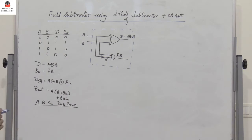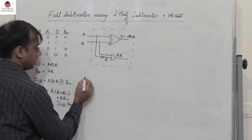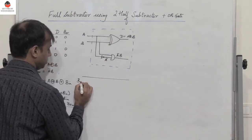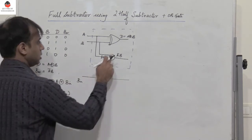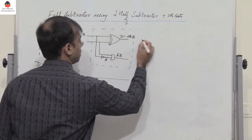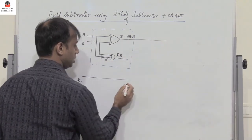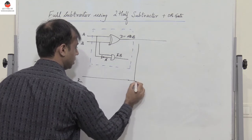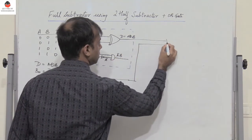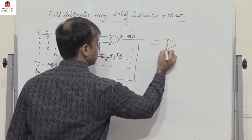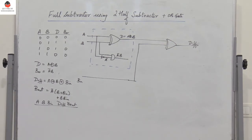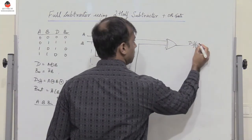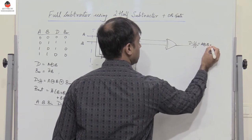Now in order to get the difference A XOR B XOR B_in, I need three inputs. So I have the third input B_in, and the intermediate output A XOR B along with B_in are passed through another XOR gate. This gives us the difference of the full subtractor, which equals A XOR B XOR B_in.